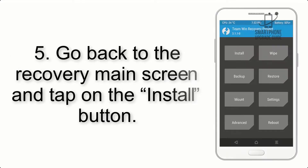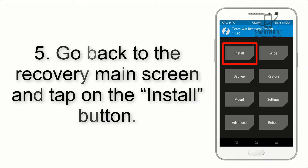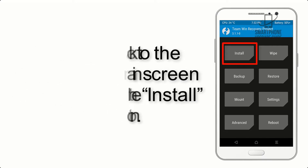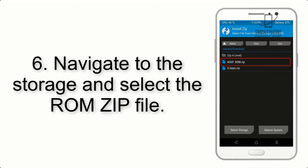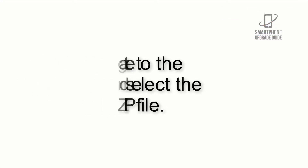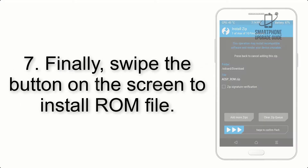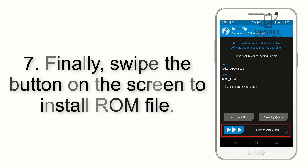Step 4: Swipe the button to wipe the device. Step 5: Go back to the recovery main screen and tap on the Install button. Step 6: Navigate to the storage and select the ROM zip file.